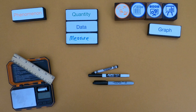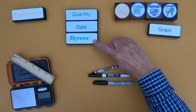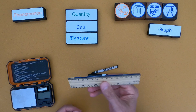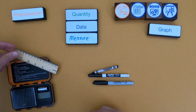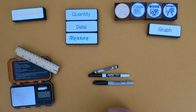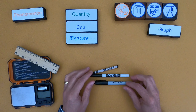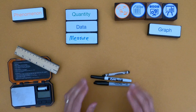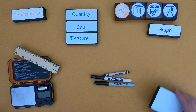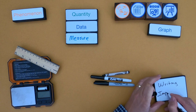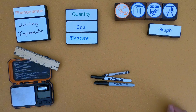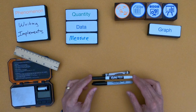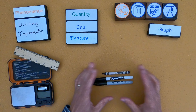We're going to gather some data, and to do that I'm going to have to do some measuring. Lots of times we'll use a tool — I'm going to use a ruler to measure length and an electric scale to measure mass. The phenomena I'm investigating is these writing implements: a Sharpie, which is a permanent marker; a Dry Erase Expo; and a Crayola.